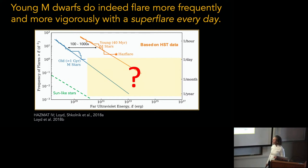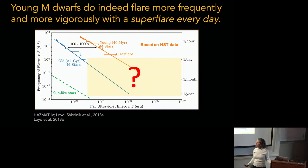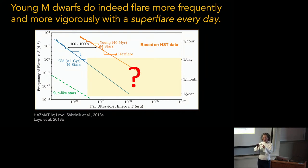Is the distinction between young and old primarily coming from rotation? We've measured the ages because these are young moving group members. The 40-million-year-old stars come from a group called Tucana-Horologium, and the old stars are field stars. There is a difference in the rotation rates — yes, it is all related to rotation. We have these evolution curves as a function of Rossby number as well.